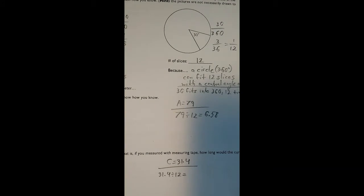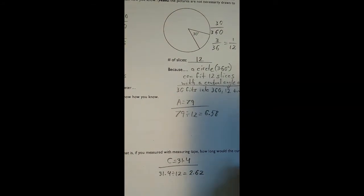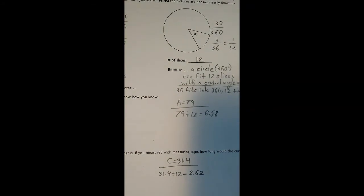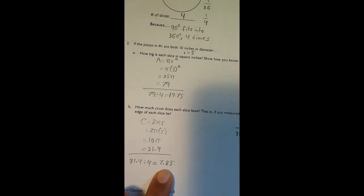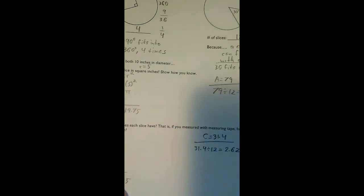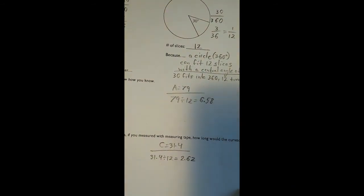That comes out to 2.62. So when we have 4 slices in the pizza, the crust is 7.85 inches long. When we have 12 slices, the crust is 2.62 inches long.